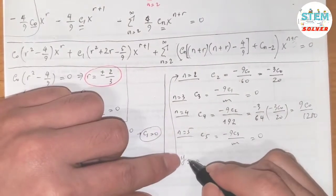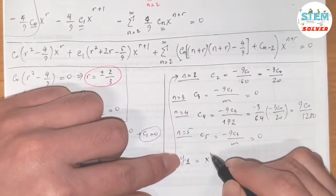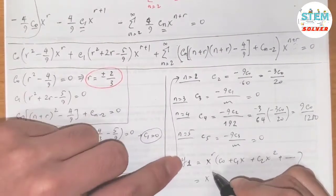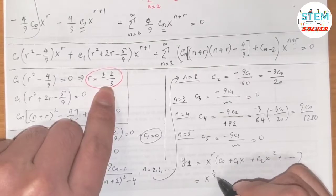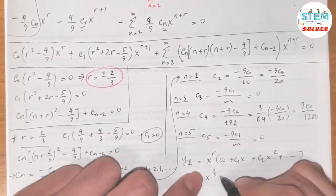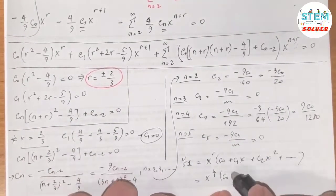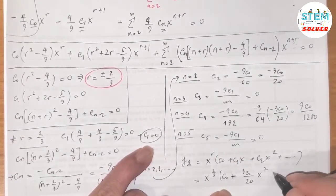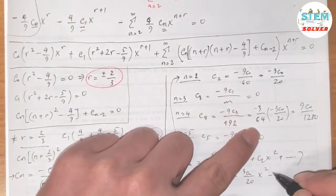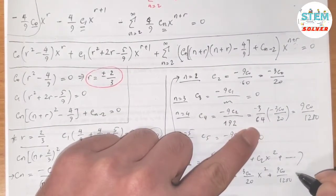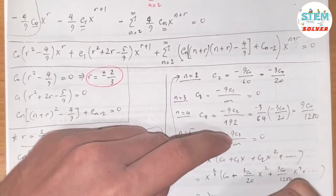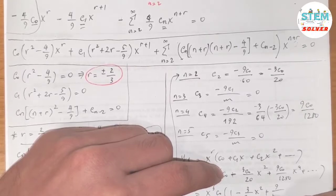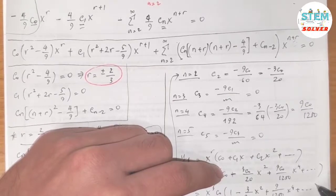So y1 equals x to the 2/3 times [c0 + c1·x + c2·x² + ...] with r = 2/3, c1=0, c2 = −3c0/20, c3=0, c4 = 9c0/1280. Factoring out c0: y1 = c0 · x^(2/3) · [1 − (3/20)x² + (9/1280)x⁴ + ...].